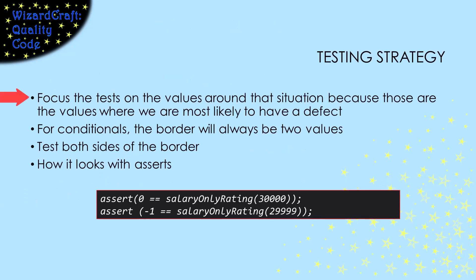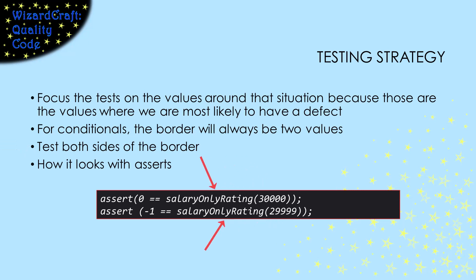Our testing strategy will be to focus on values where we're most likely to find a defect. For conditionals, that will be at the borders — the two values that are close to each other but cause different behaviors. We'll make our tests check both sides of that border, and this is what it will look like in our tests: two asserts, one small change in input, checking different return values.